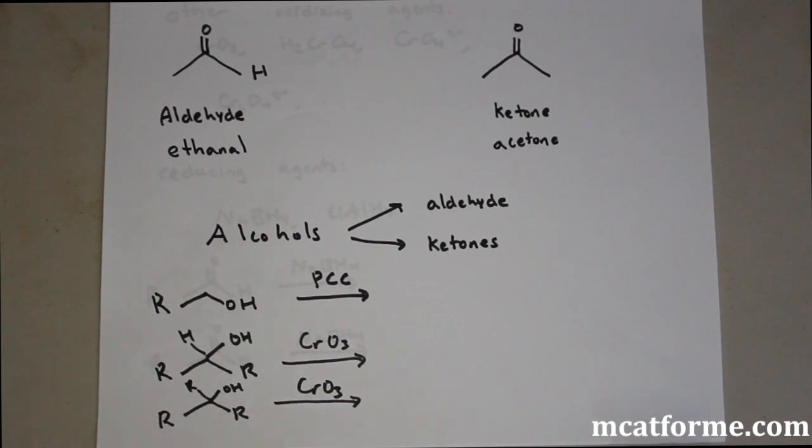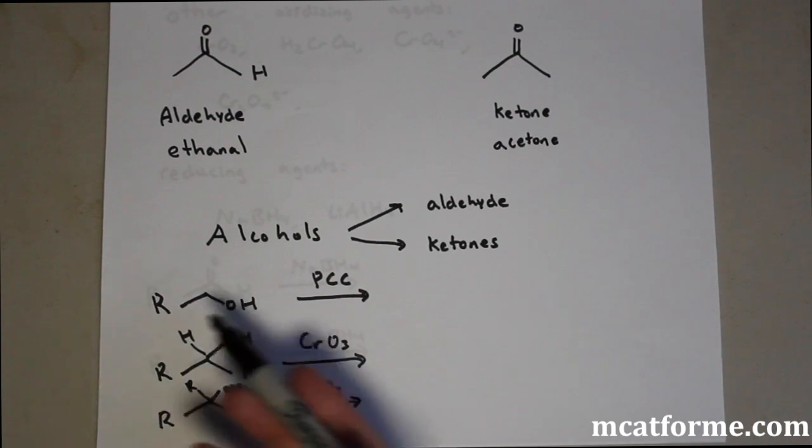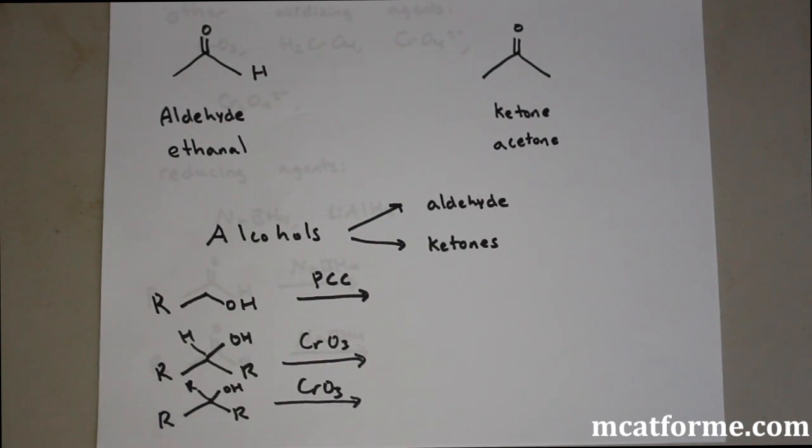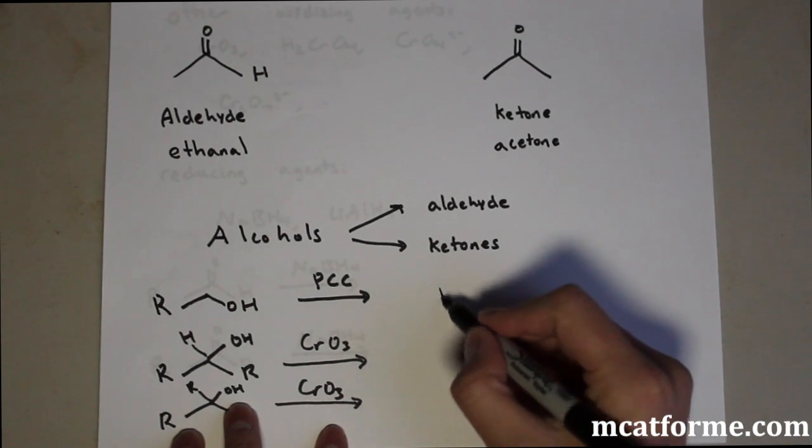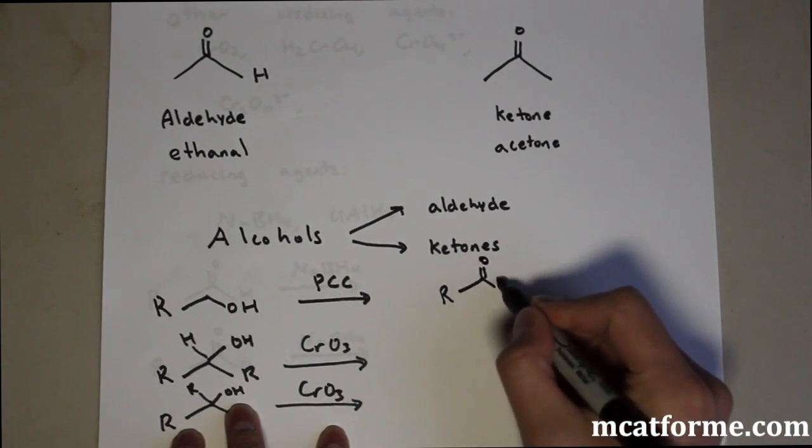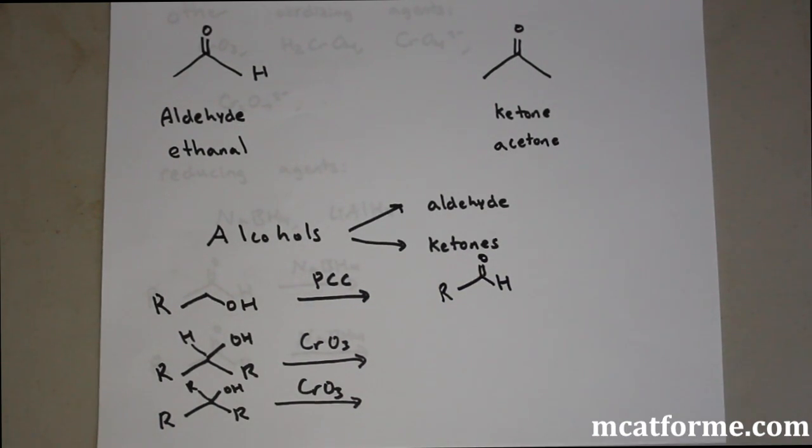Different alcohols will make either aldehydes or ketones. These are all oxidizing agents: PCC, CrO3. We divide into primary alcohols, secondary alcohols, and tertiary alcohols - that's based on the number of carbons attached to that main carbon. In the primary alcohol, when we add oxidizing agent, we're going to get an aldehyde.